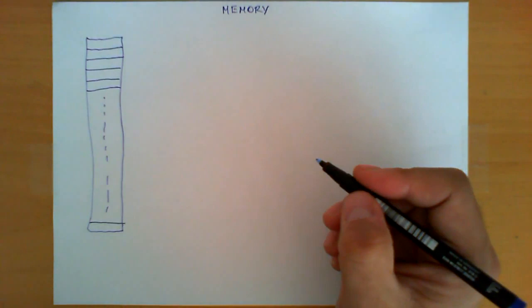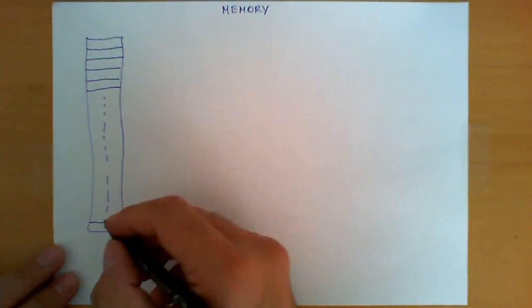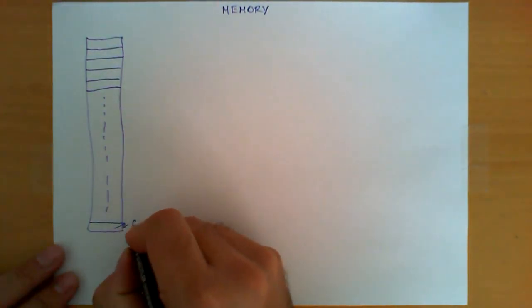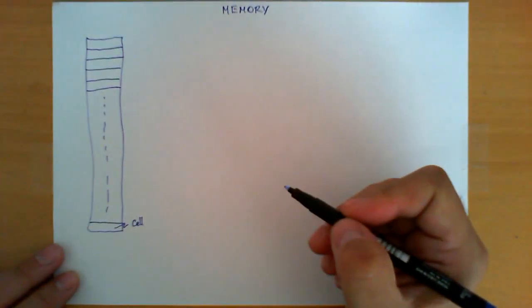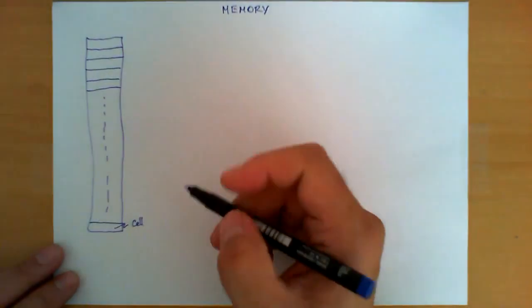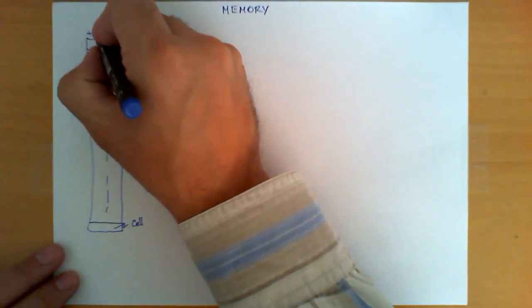It's basically a very large table with typically a very large number of these cells. This table has specific properties. First, each one of these boxes we call a cell, and it has the property of being able to remember, that's why we call it memory, remember one value.